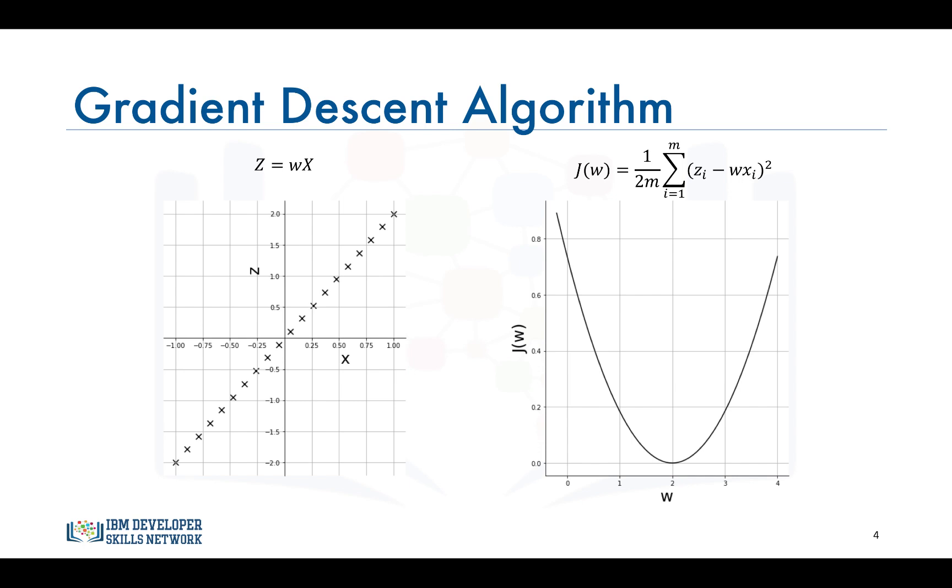We start at a random initial value of w, let's call it w0 and say it's equal to 0.2, and we start taking steps towards the green dot which is w equals 2. To determine in which direction to move, we compute the gradient of the loss function at the current value of w which is 0.2.